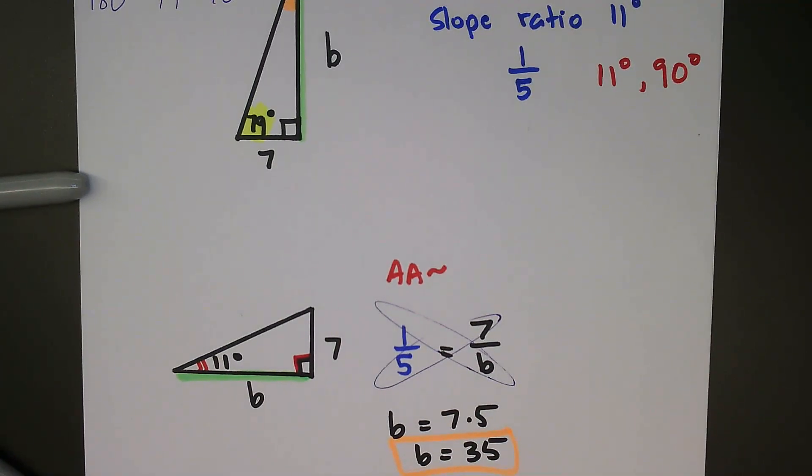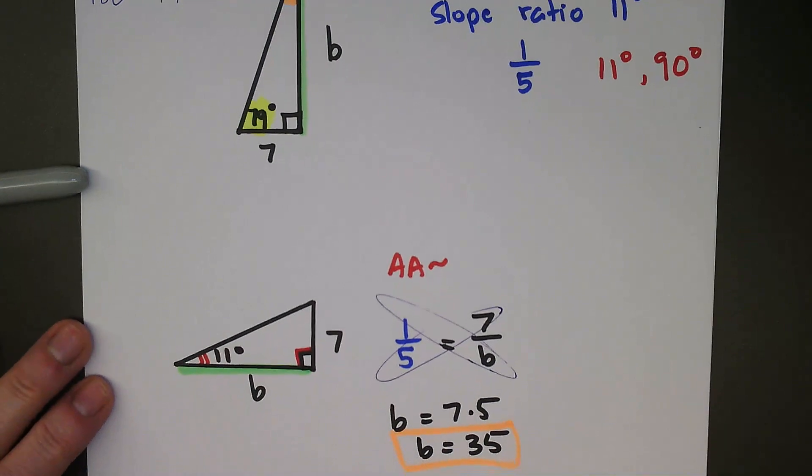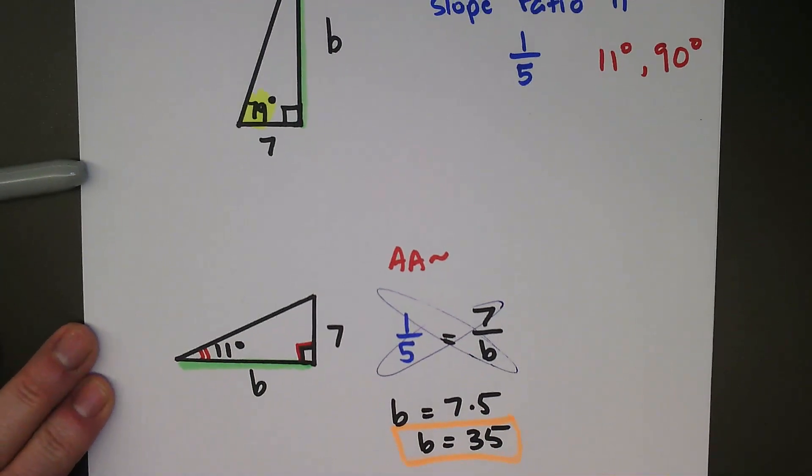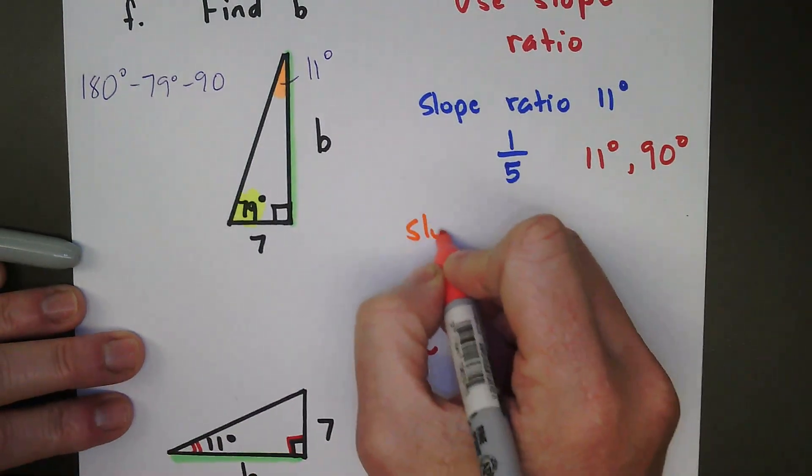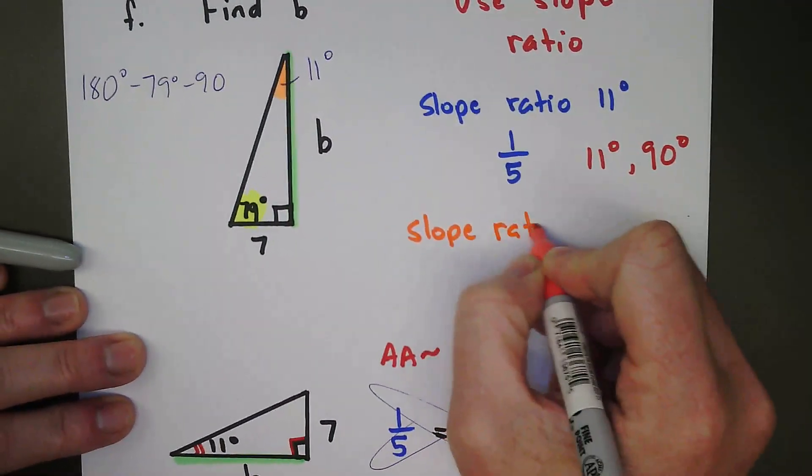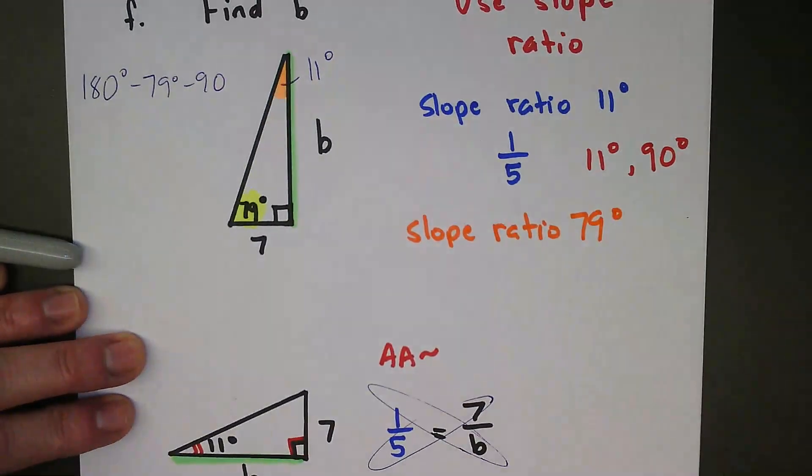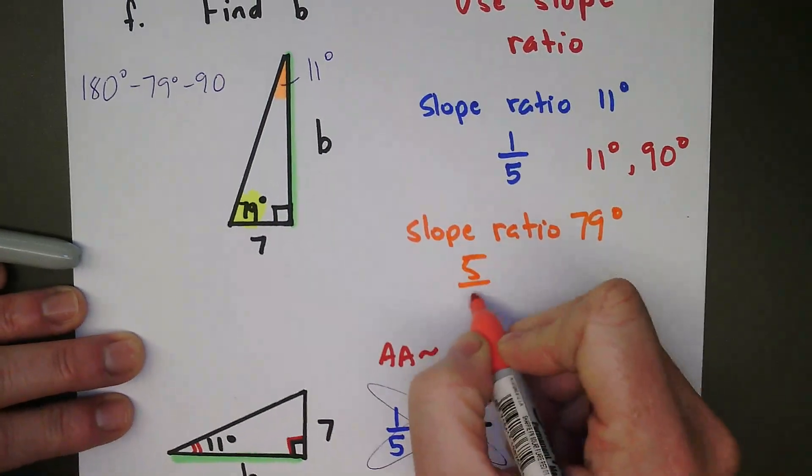Now, eventually, we'll be using trigonometry, and then after you know more slope ratios, you probably don't even have to go through this process. So you definitely wouldn't solve it twice. But just to show you, if we went from here, if you also knew your slope ratio for 79 degrees, which eventually we did learn, so our slope ratio from 79 degrees, that is 5 over 1.